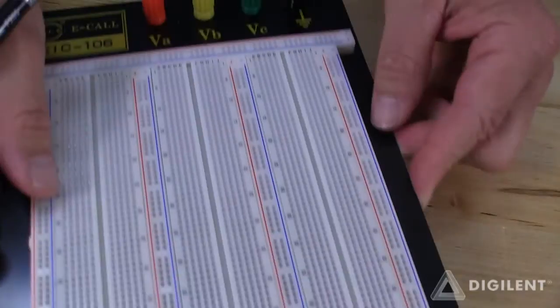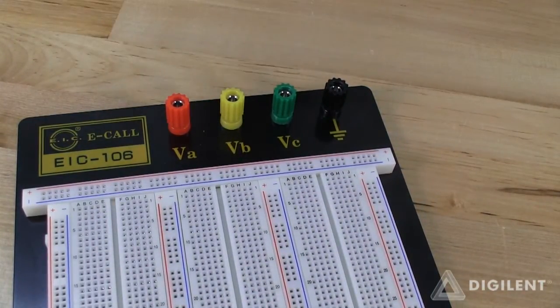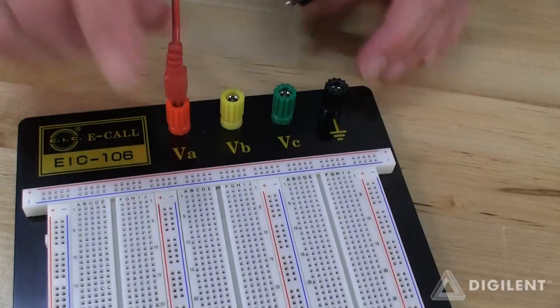Still fancier breadboards have banana plug type connectors integrated into them. These connectors can make it easier to connect your circuits to certain types of equipment. Just insert banana plugs into these connectors.